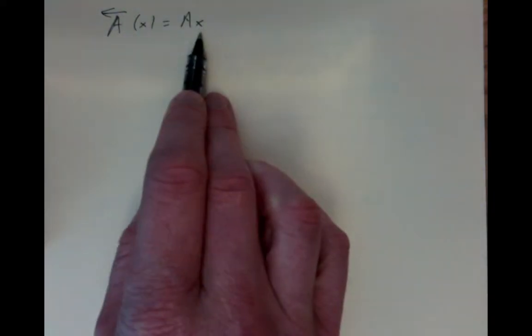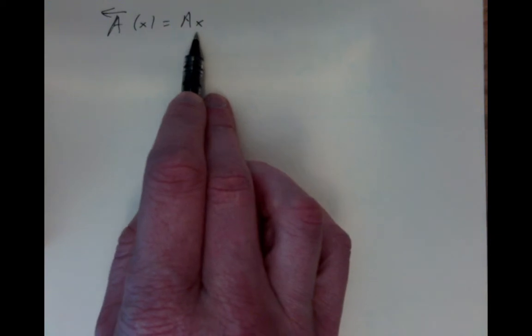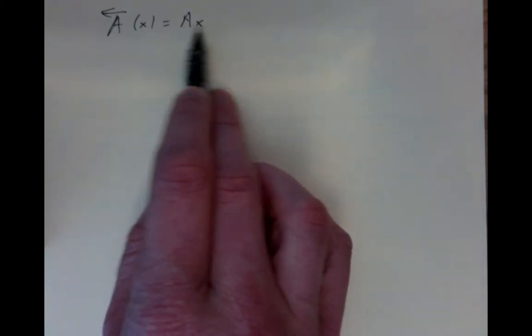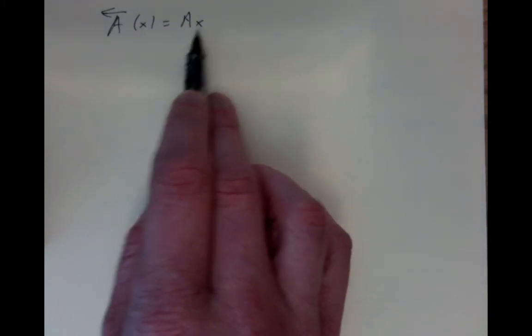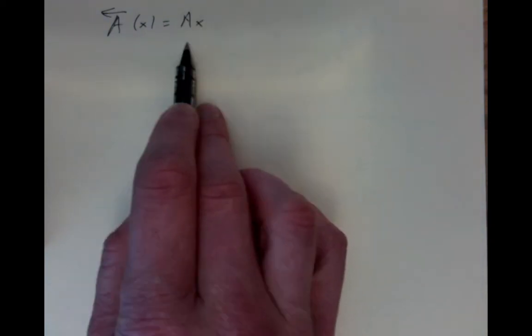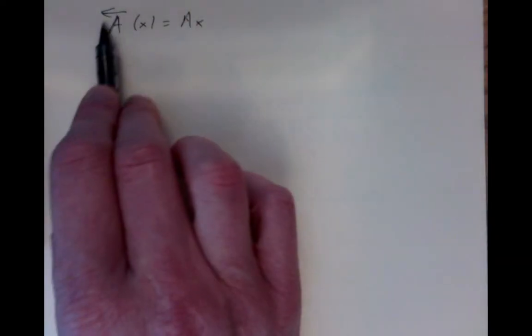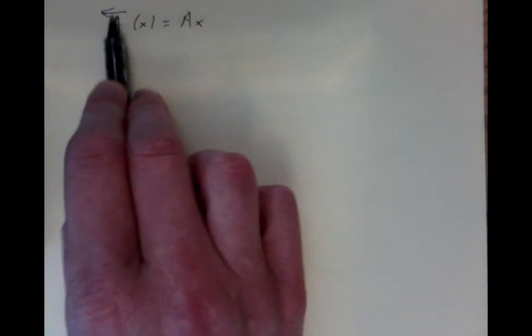So we take a vector x, apply this linear transformation, and get a vector out. This is exactly the sort of linear vector field we looked at in previous examples.